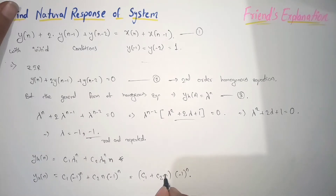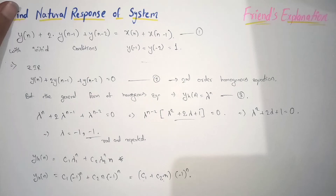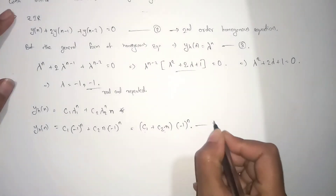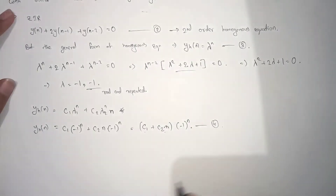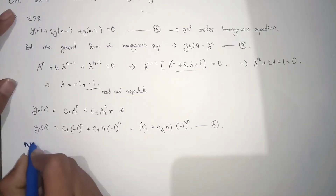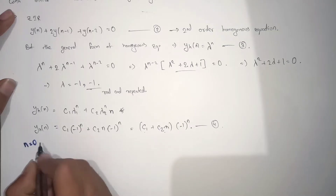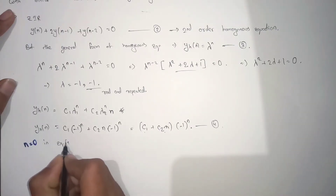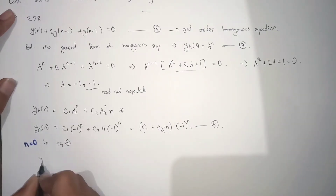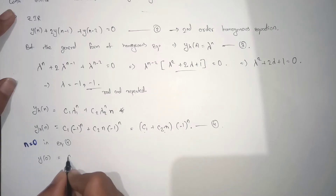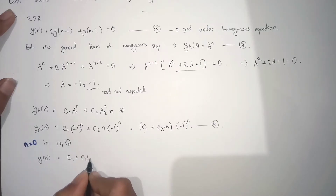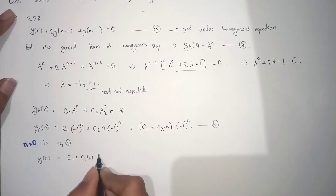Now we will find out the C1 and C2 values, then this equation will become the natural response. Consider this as equation 4. We will substitute n = 0 into equation 4. For n = 0, we get: y(0) = (C1 + C2·0)·(-1)^0.